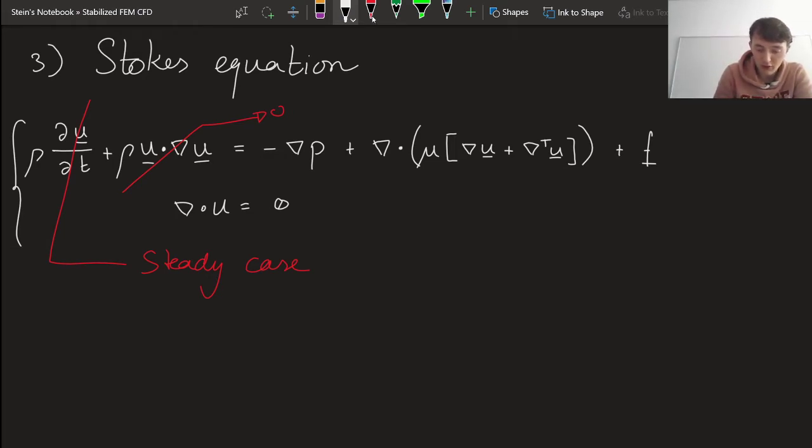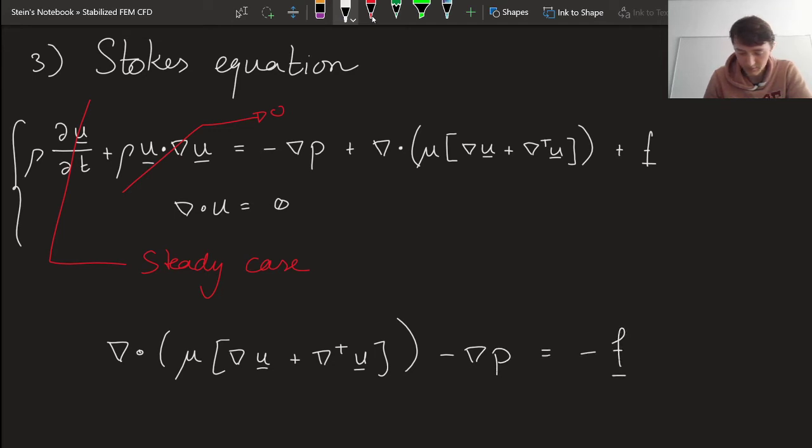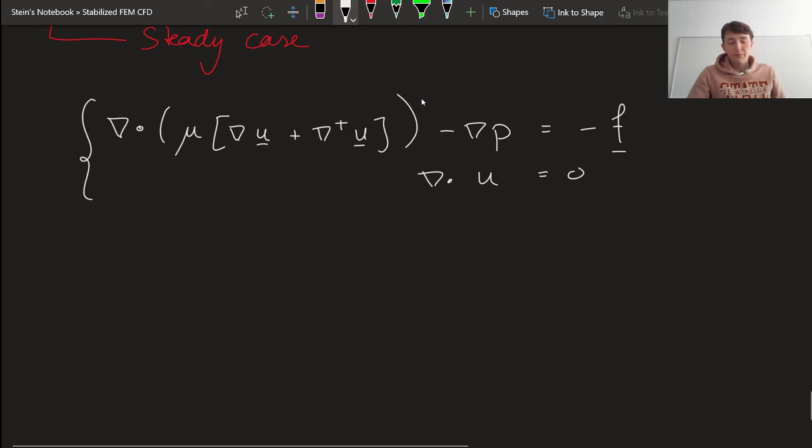then the Stokes equations would look like this. And that the divergence of u is going to be equal to zero. So we have these two relations. So this is one way of writing the steady Stokes equations.